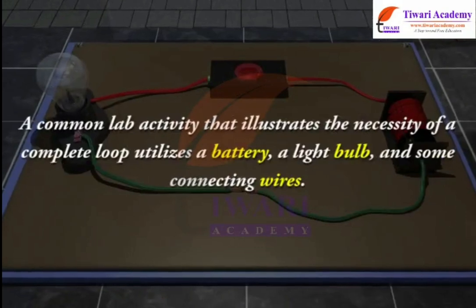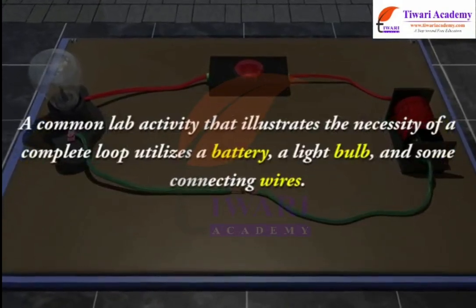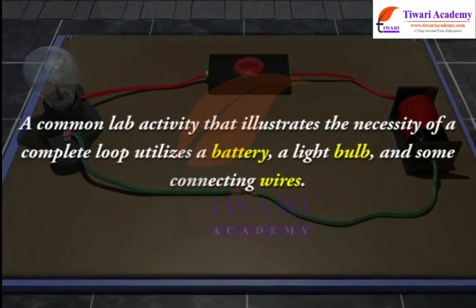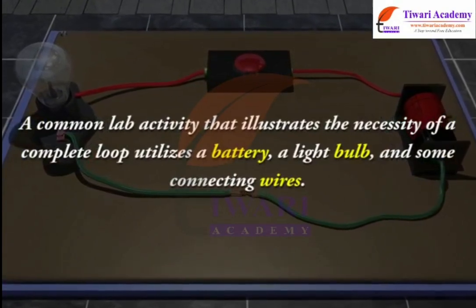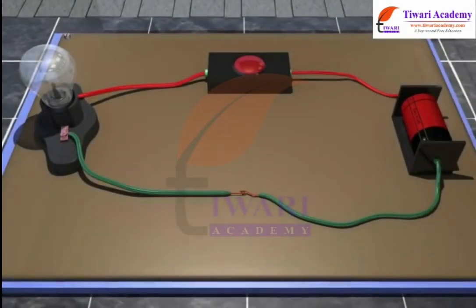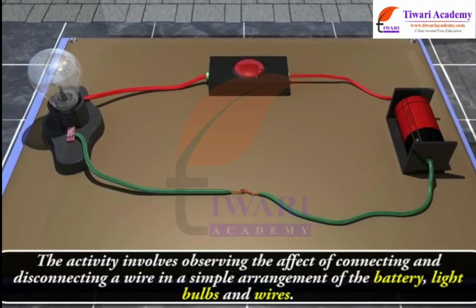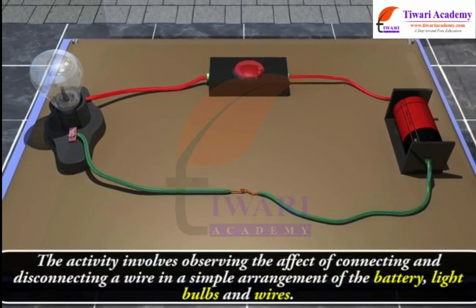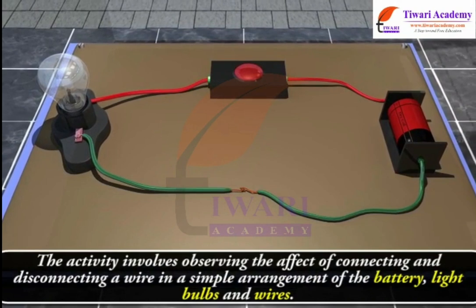A common lab activity that illustrates the necessity of a complete loop utilizes a battery, a light bulb and some connecting wires. The activity involves observing the effect of connecting and disconnecting a wire in a simple arrangement of the battery, light bulbs and wires.